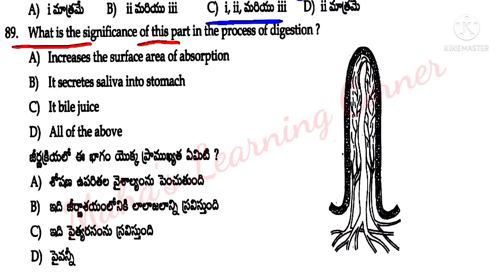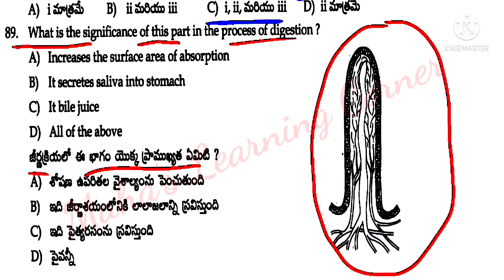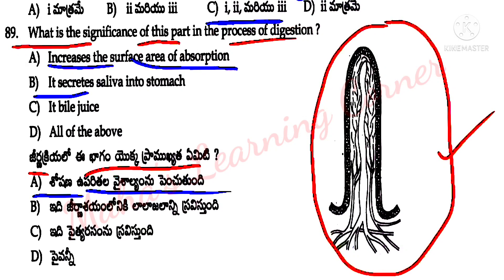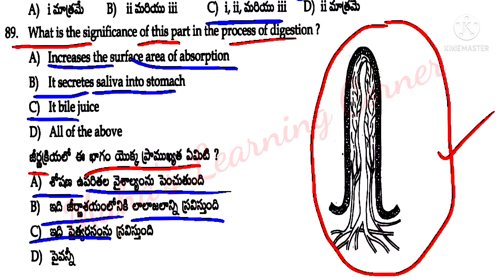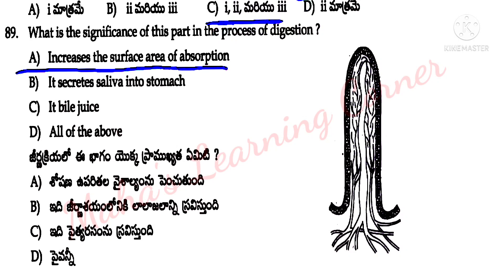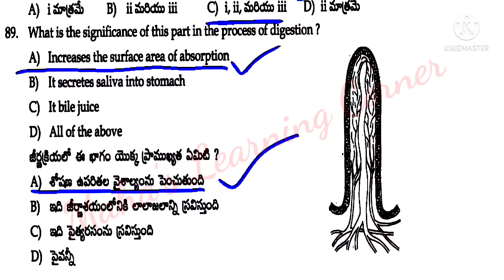What is the significance of villi in the process of digestion? Options: increase the surface area of absorption, it secretes saliva into stomach, it is bile juice, all the above. Correct answer: option A — villi increases the surface area of absorption.